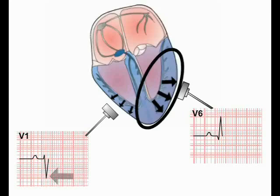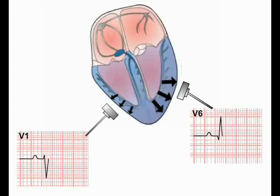In contrast, this signal is moving towards lead V6, producing a strong positive deflection. The flow of depolarizing current around the ventricles is recorded as the QRS complex, and as we've just seen, the morphology of the QRS complex differs predictably in the ECG leads depending on their position relative to the heart. We'll come back to the precise nomenclature of the QRS complex later.